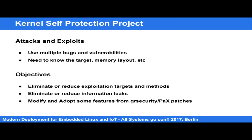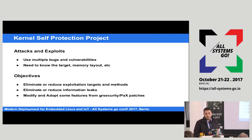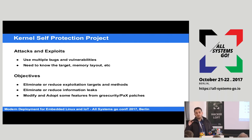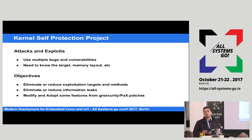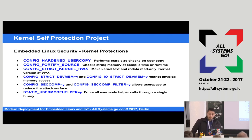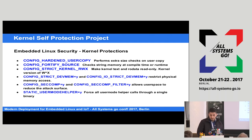There's a link to check the project. In sophisticated attacks, attackers use multiple bugs and vulnerabilities to get root access — they need to know the memory layout, what's running, and what protections are in place. The objective of the kernel self-protection project is to reduce these exploitation techniques and reduce the attack surface. Most of this comes from grsecurity patches that were adopted, modified, and upstreamed.